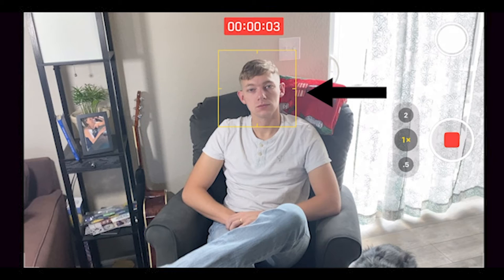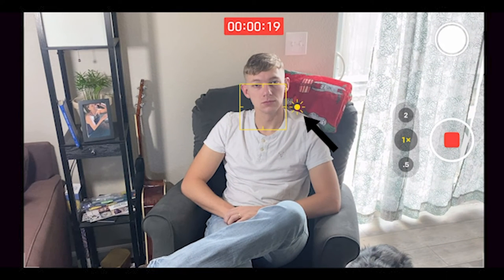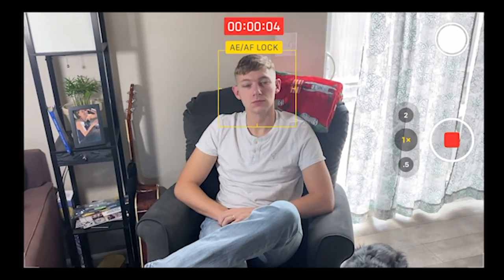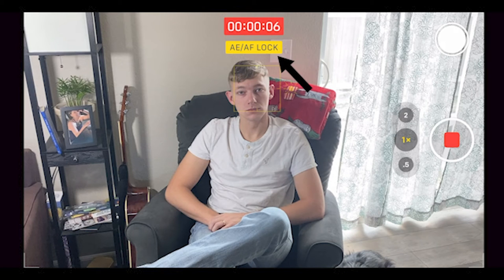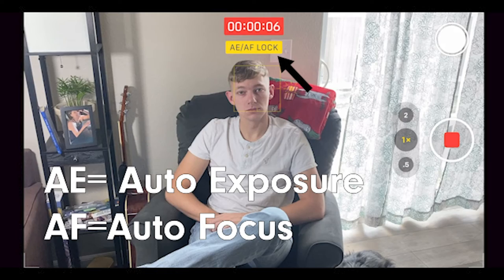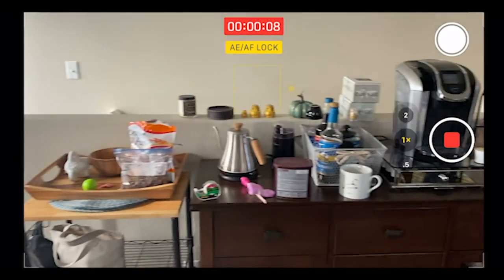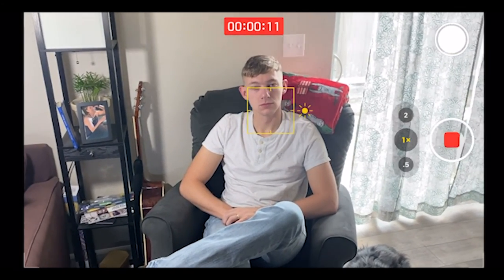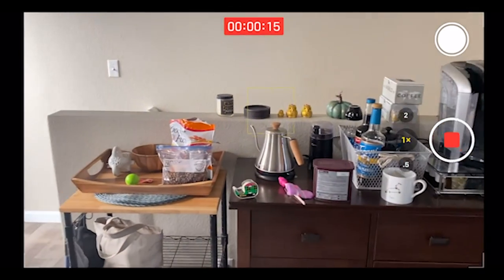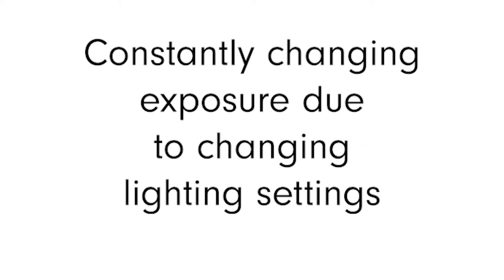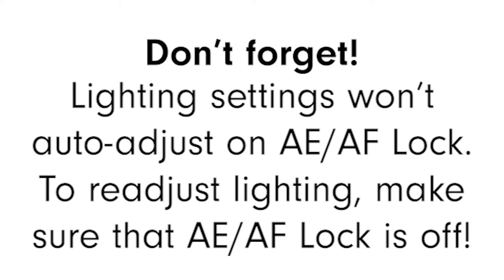Your phone will automatically focus on what it thinks is the subject — usually whatever is moving or whatever's in the center of your video. If it's having trouble guessing what you want it to focus on, you can tap on your subject to refocus your camera, which also automatically adjusts the lighting settings. Another useful tool is exposure and focus lock: tap and hold with one finger on your screen to lock the exposure and focus. This is handy if you're tracking a subject or moving your phone around, since it prevents big exposure differences and stops the camera from constantly refocusing. Keep in mind that with exposure and focus lock, your camera won't auto-focus or auto-expose, so make sure you do a test run before you shoot anything for real.